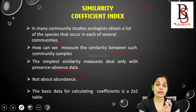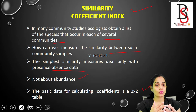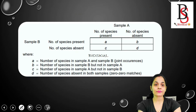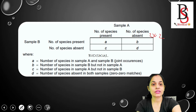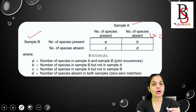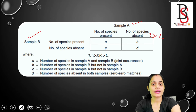We can calculate the similarity coefficient index by simply plotting a two-by-two table. Look over here — just plot a two-by-two table, then write down Sample A or Community 1, and Sample B or Community 2. In the table, put the values a, b, c, d.